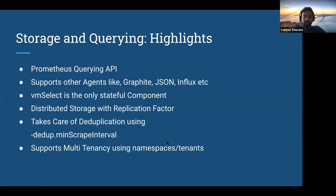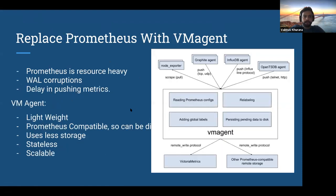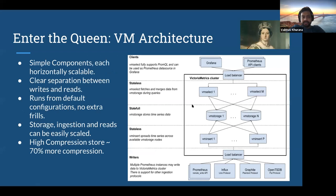VictoriaMetrics also supports multi-tenancy. There are multiple organizations with multiple teams, multiple business units, and if you want to do segregations within business units, teams, or project IDs, you can do them via multi-tenancy support using namespaces or tenants. So till now, we've taken care of the storage side and querying side — storage is sorted, querying is sorted. But we haven't replaced the scraping agent — the agent for scraping things is still Prometheus itself.